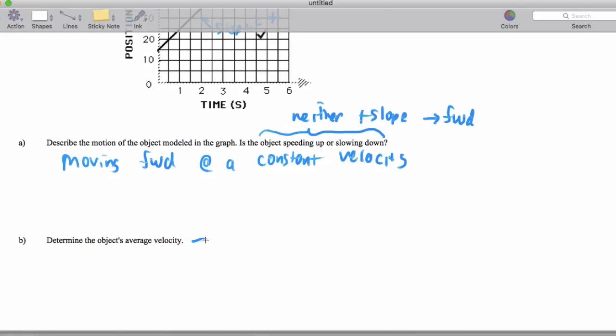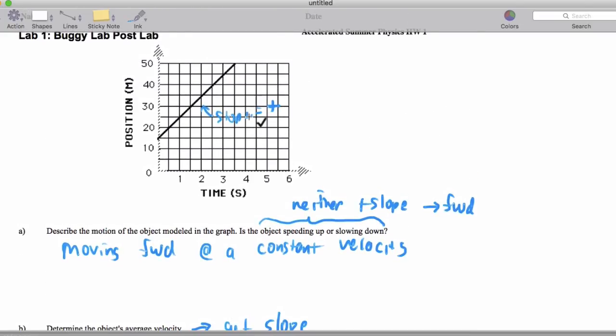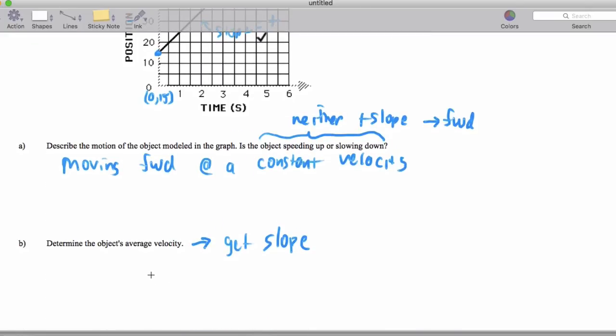Now it says, determine the object's average velocity. This is another way of saying get the slope, because that's how we do this with the position graph. So I'll look here, say at, if I measure this coordinate here, this is at 3.5 seconds, I'm at 50. And at 0 seconds, I appear to be at 15. So let me just go ahead and calculate the slope based on that.